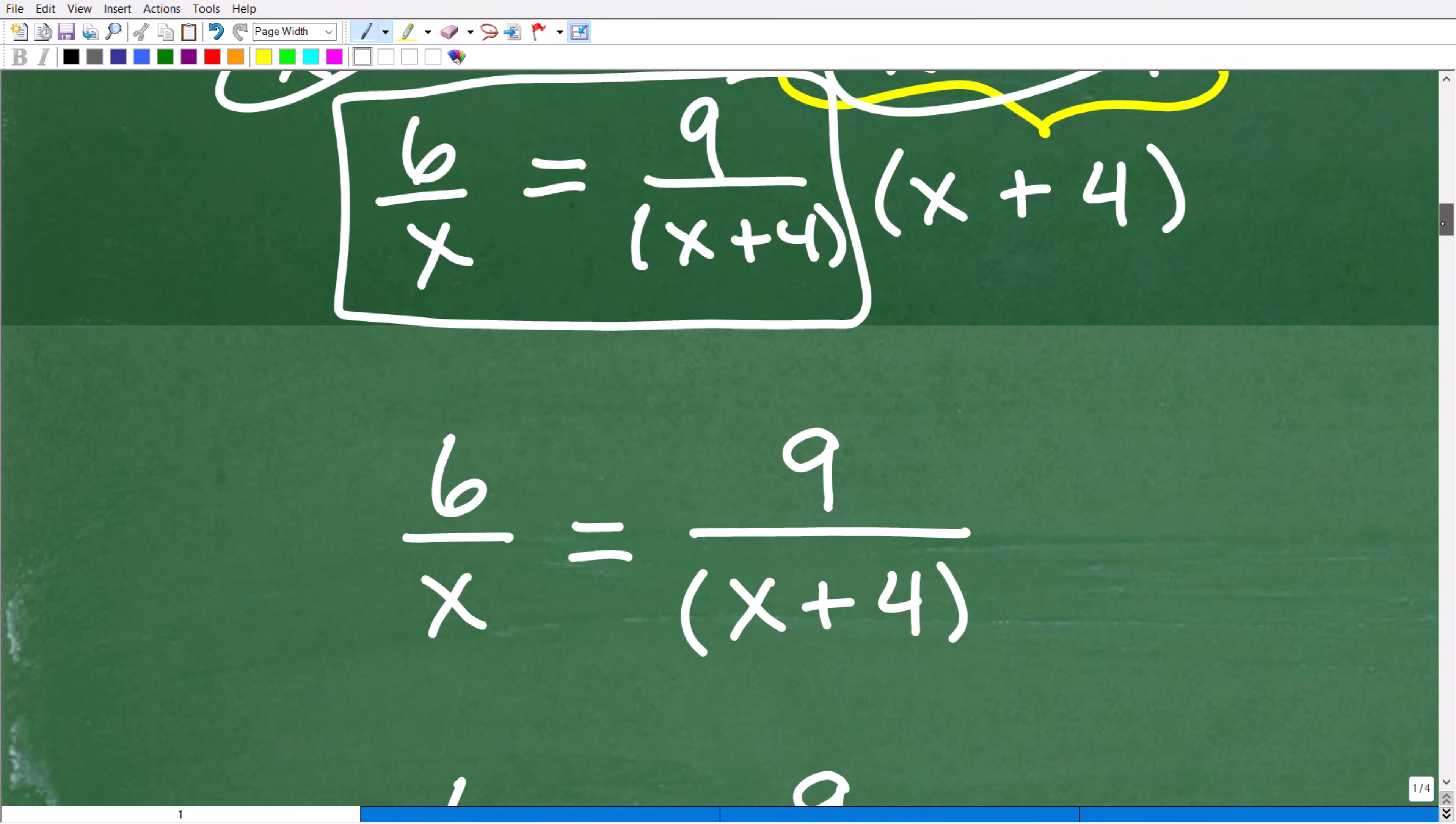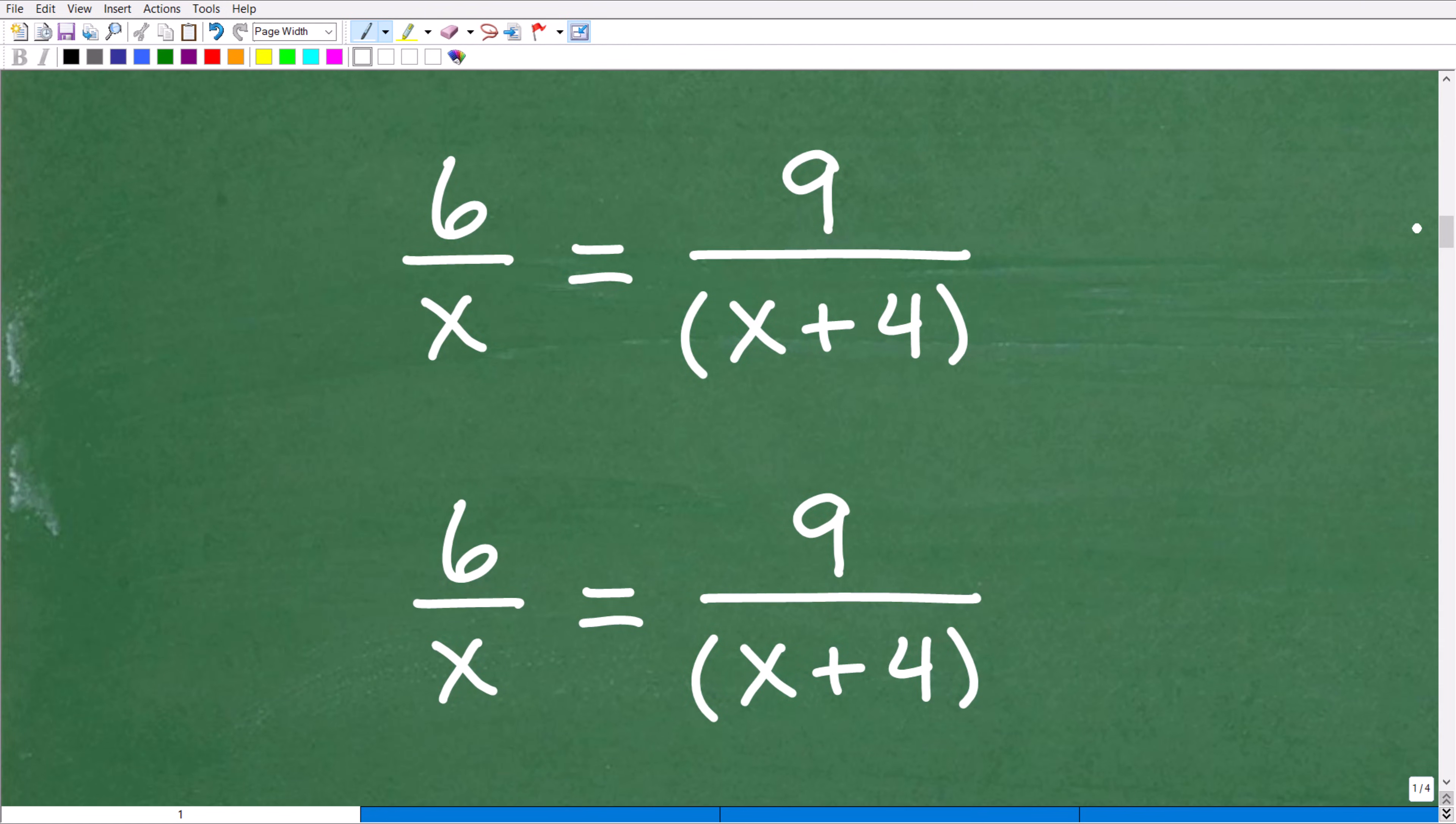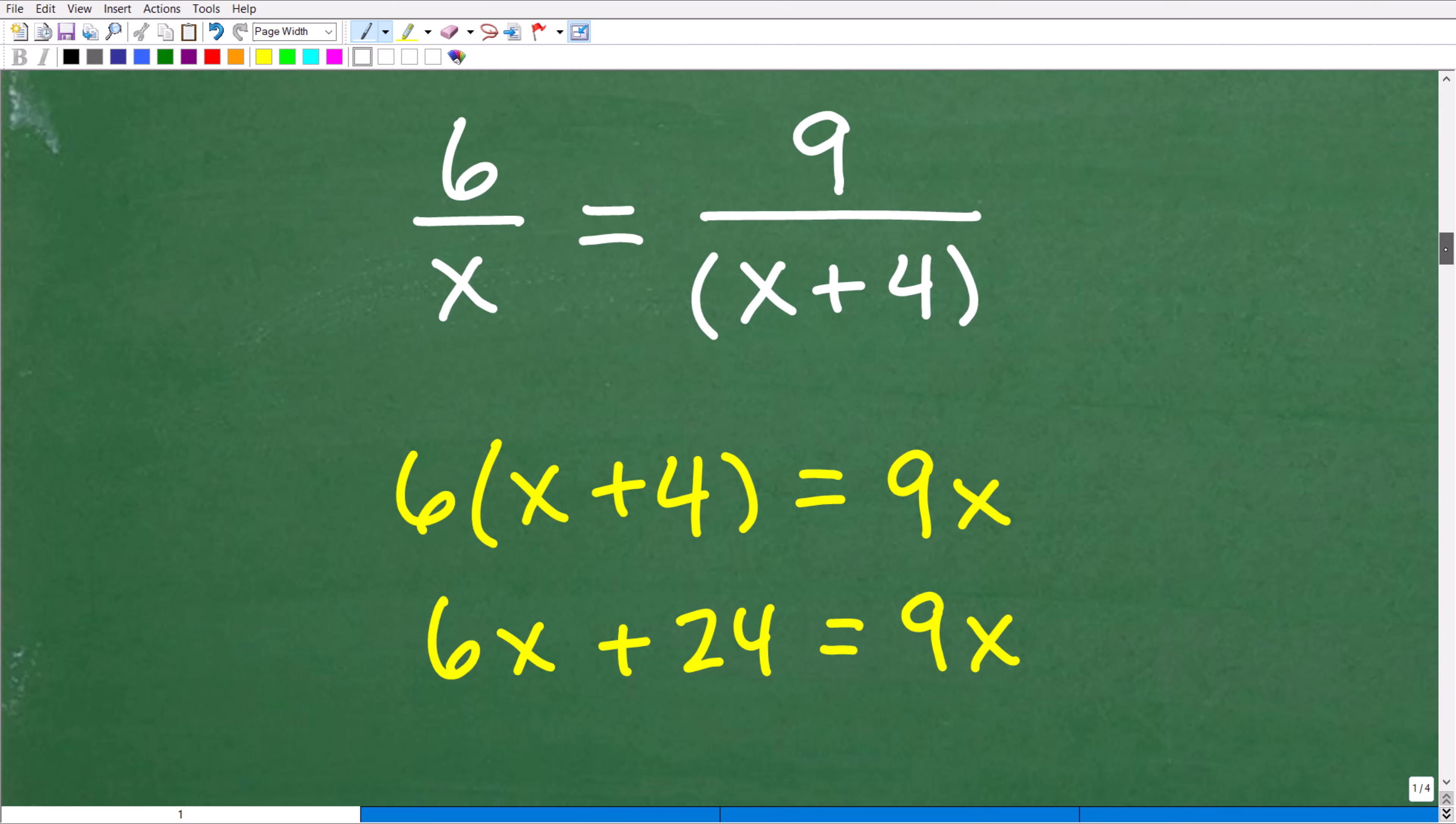We're going to solve this proportion. When you have similar figures or similar triangles, the respective sides are in proportion. If we compare any two sides - we're comparing the height to the base to the height to the base - then those fractions are equal. Now we need to simply solve this proportion with some basic algebra.